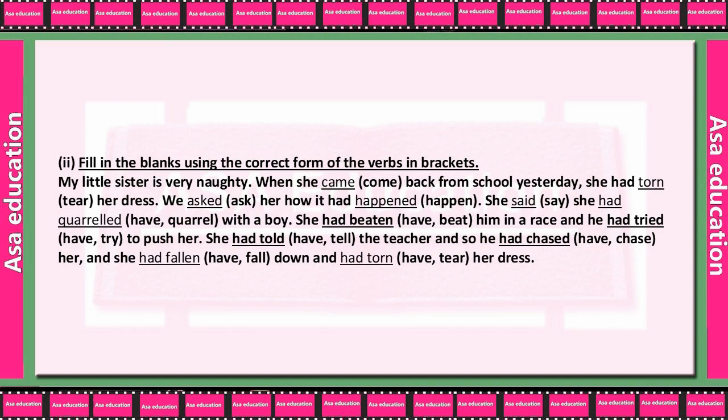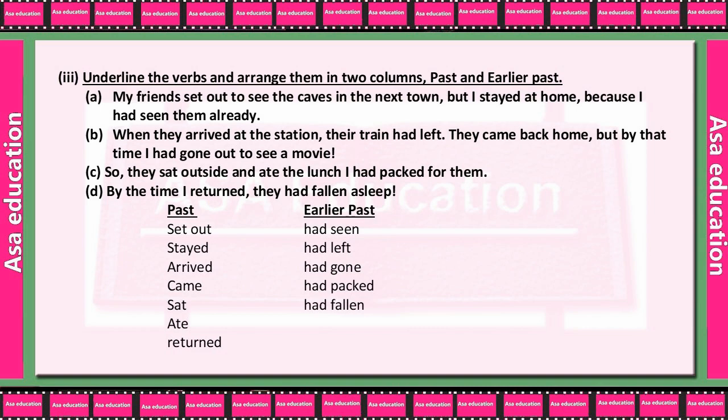She had told the teacher, and so he had chased her. She had fallen down and had torn her dress. Now underline the verbs and arrange them in two columns: Past and Earlier Past.